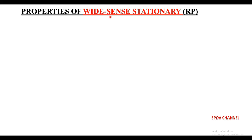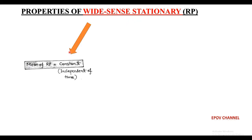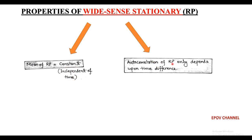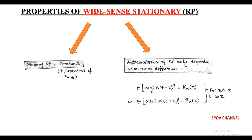Next, we discuss the properties of a wide-sense stationary random process. The first property is that the mean value is always constant, i.e., independent of time. Secondly, the autocorrelation of such a random process depends only upon the time difference, that is, expectation of X(t) times X(t minus tau) or expectation of X(t) times X(t plus tau) equals R(tau), for all values of t and tau.